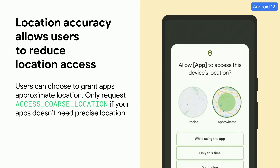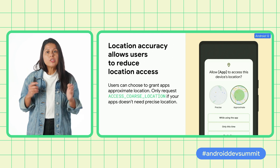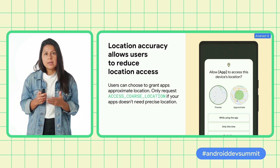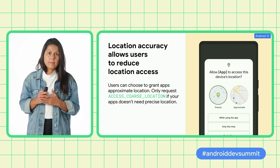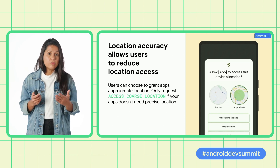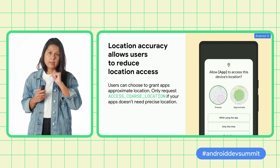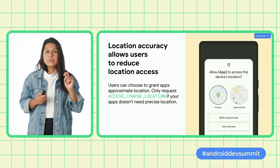In Android 12, we've added additional controls for location. Next time an app needs location, users will have a clear choice to reduce the accuracy provided to the app by selecting an approximate location. We encourage all developers that need location to review your use case and only request coarse location if your feature doesn't need the user's precise location. It's important that you explain to users why your feature needs access to location and progressively request fine. Always be prepared for the user to only grant you coarse — your app should still work.